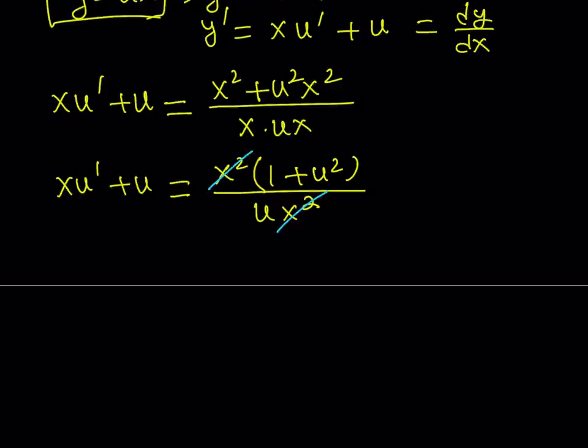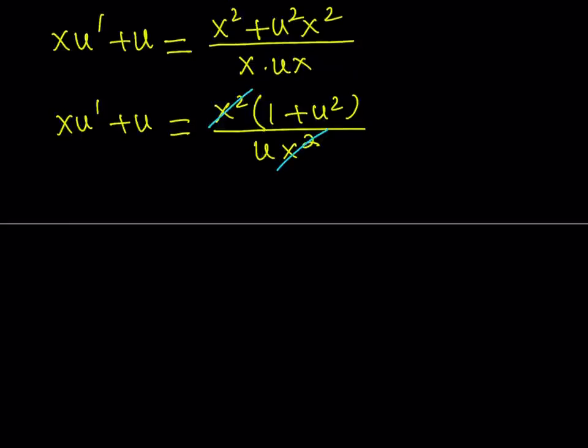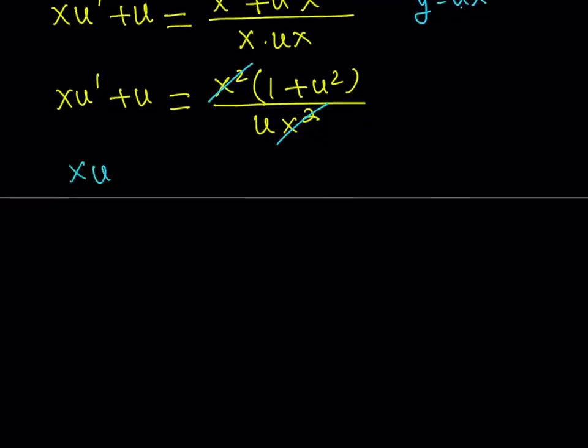We get the following expression. And since x and y are not going to be 0, u is not going to be 0 either. Because we assume that y is equal to ux. If u is 0, then y has to be 0. But that's not possible. So u is not going to be 0 either. Therefore, we can just separate this into two fractions. And write it as x u prime plus u equals 1 over u plus u squared divided by u is equal to u in this case. Since u does not equal 0.